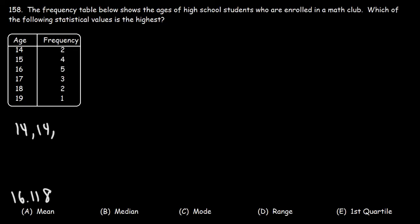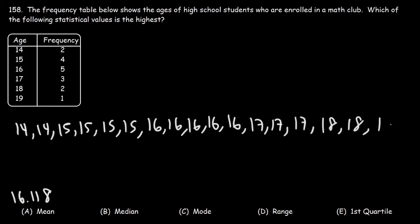So we have two 14s, four 15s. You want to write this in increasing order. And then we have five numbers with a value of 16, three 17s, two 18s, and one 19.